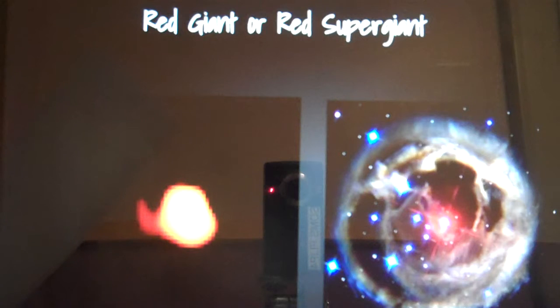If the star is average, it will turn into a red giant. If it is a massive star, it will take a different path, turning into a red supergiant. They form the same way. The only difference is the size.